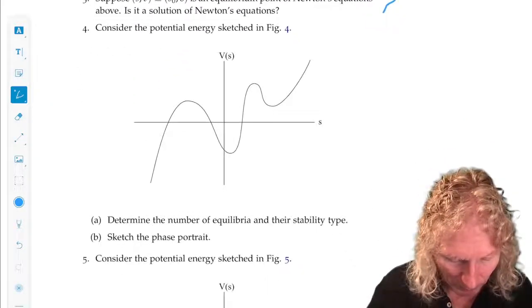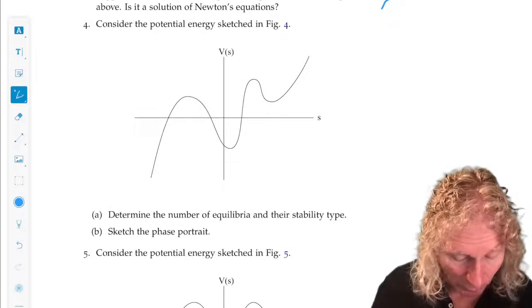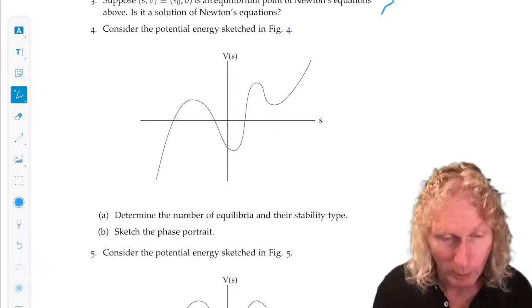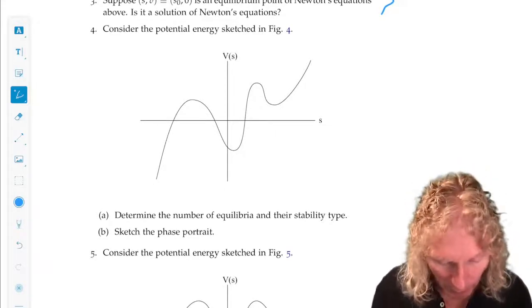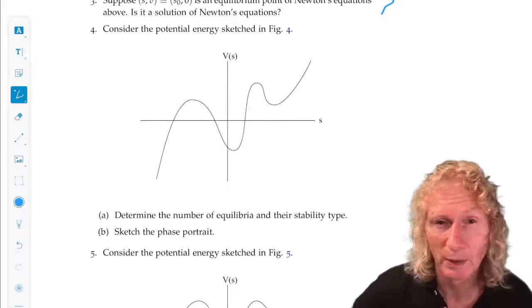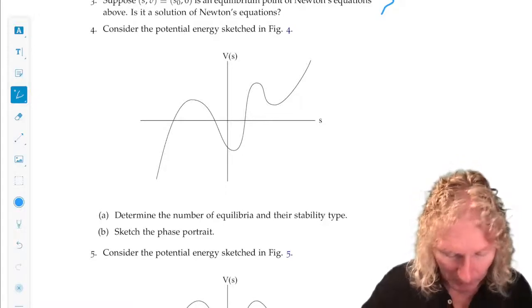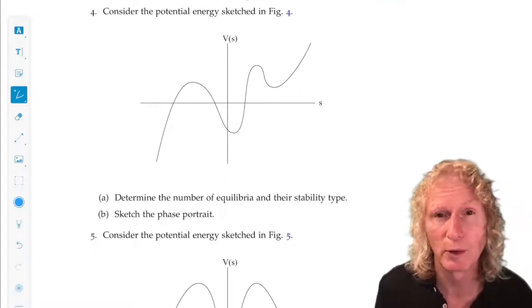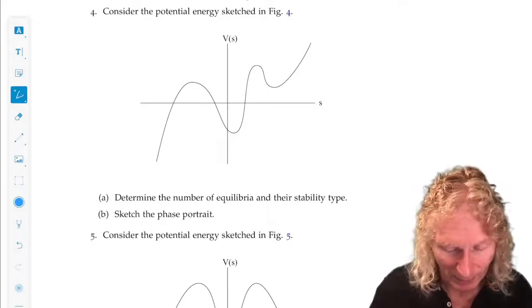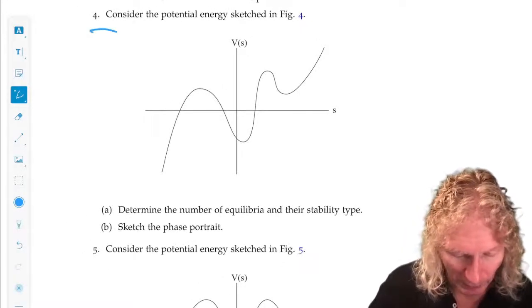Okay, in the next four questions I give you a sketch of potential energy curve and I want you for that curve to determine the number of equilibria and their stability type. Critical points, local minima, local maxima, and then sketch the phase portrait. This is for problem four. The phase portrait is pretty interesting.